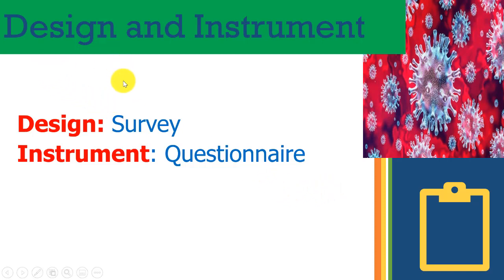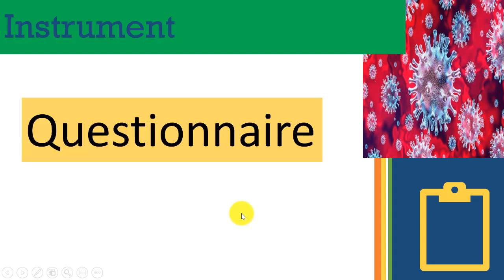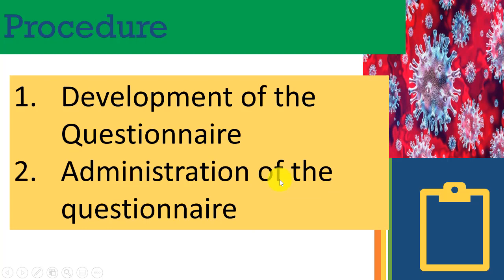Now that we have defined our problem, we want to design a study and get an instrument for collecting data. The design we want is a survey — we want to survey Africans all over the place, so a survey design is appropriate. The instrument we want to use is a questionnaire. In doing this survey, our class has students from Nigeria, Burundi, Ghana, and DRC. As Professor Ibandili taught us, we don't have the luxury of going all over Africa doing broad sampling, so our class itself is the sample we are using. The instrument is a questionnaire and the procedure is to develop it and administer it.